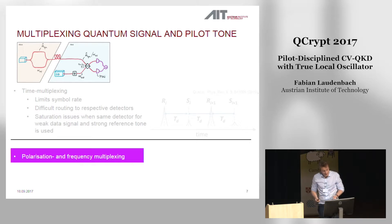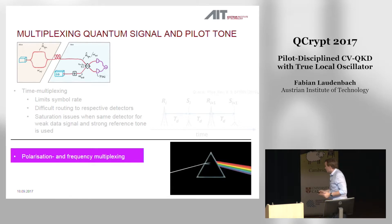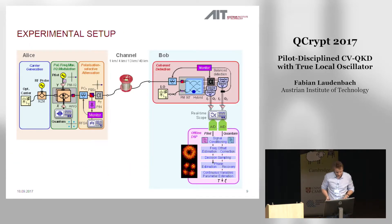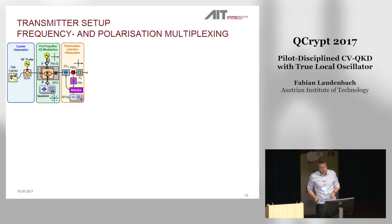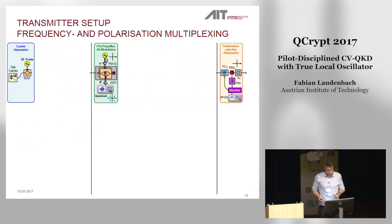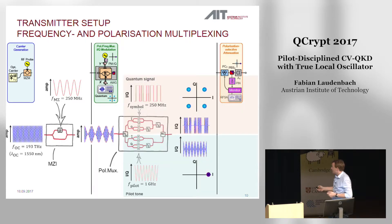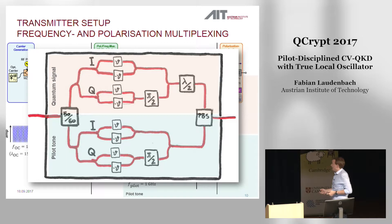What we are proposing instead is a polarization and frequency multiplexing scheme — and not multiplexing of the optical frequency, but multiplexing of the modulation frequency. Let's have a look at the experimental setup, starting with the transmitter. It's composed of three parts mainly. First, Alice prepares a pulse train of 250 MHz out of a CW laser using Mach-Zehnder interferometry. The next step is already the crucial part — where the polarization and frequency multiplexing takes place.